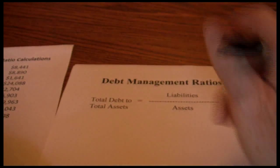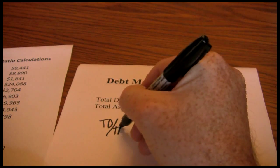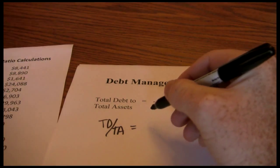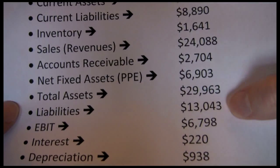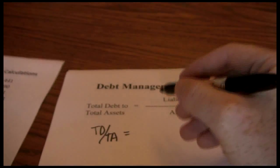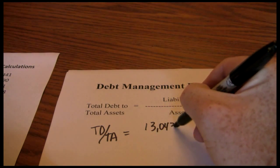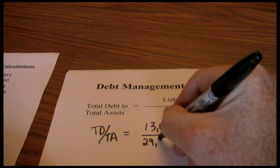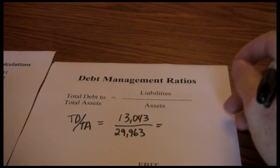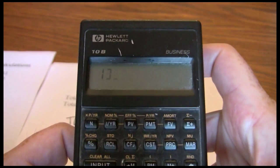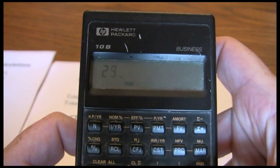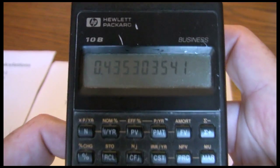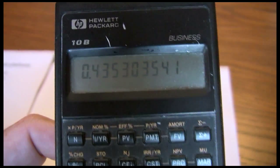In Coca-Cola's case, our total debt to total assets ratio was our liabilities of $13,043 divided by assets of $29,963, and that gives us a total debt to total assets ratio of approximately 43.5%.